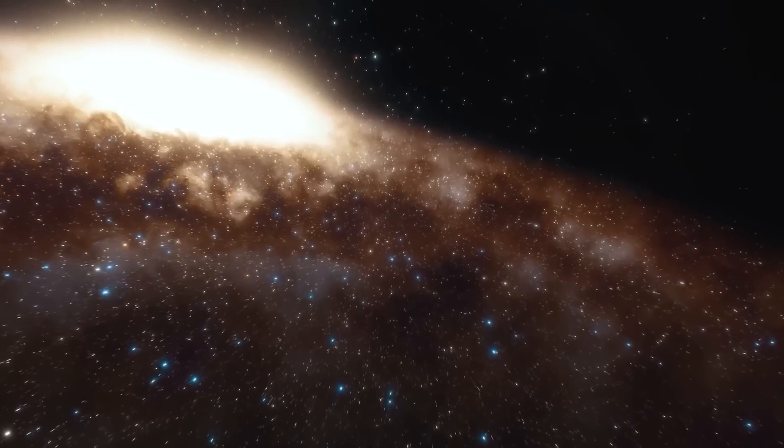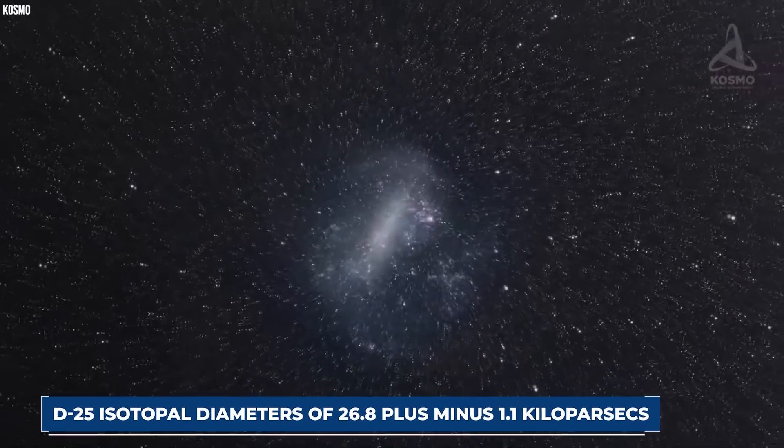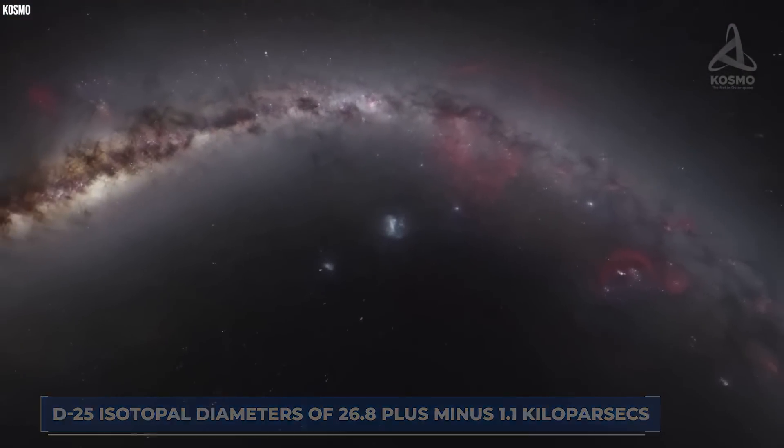Structurally, the Milky Way is a barred spiral galaxy with an estimated d25 isotopal diameter of 26.8 ± 1.1 kiloparsecs. The spiral arms of the galaxy are just 1,000 light-years thick.